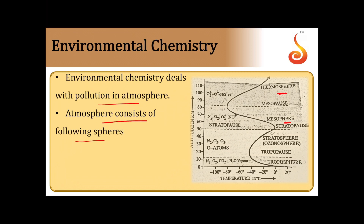From 0 to 11 kilometers approximately is called the troposphere. The troposphere consists of N2, O2, CO2, and water vapor. The temperature varies from 15 degrees Celsius at the lower end to minus 56 degrees Celsius at the upper end.